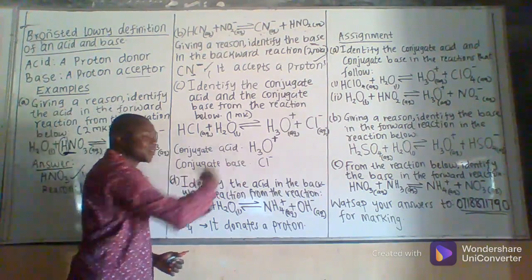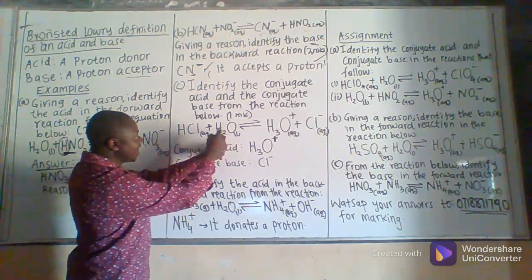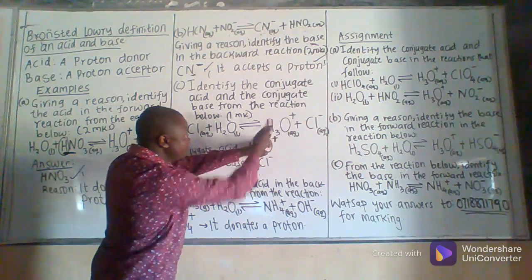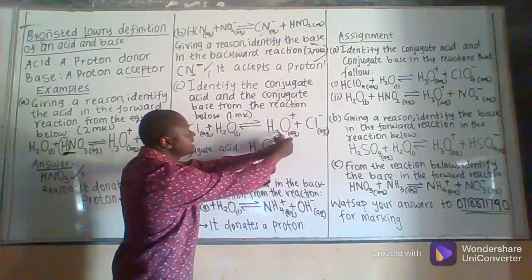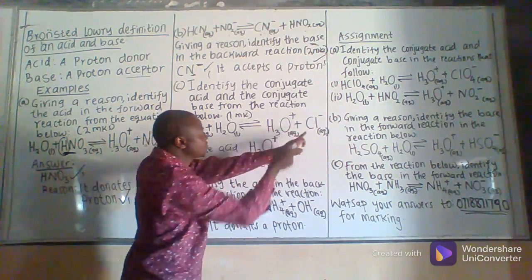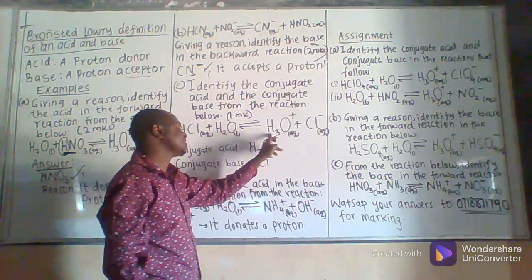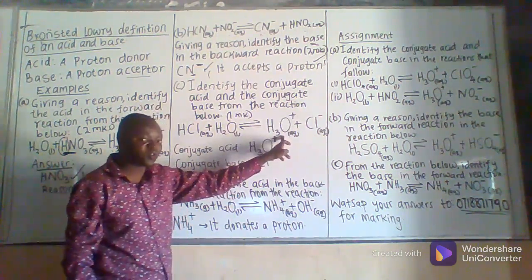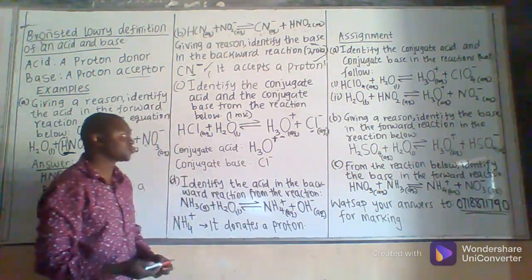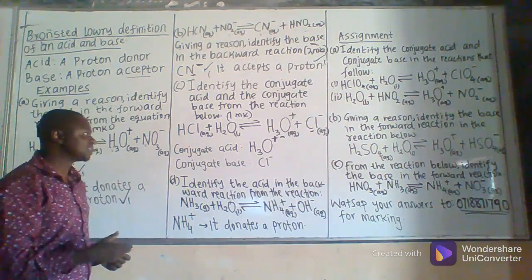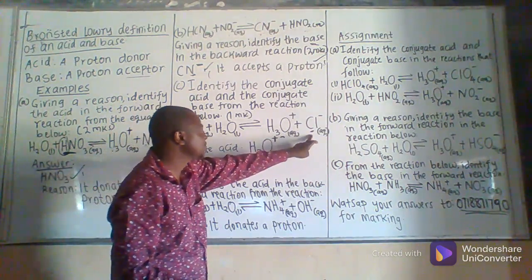Particularly if the backward reaction starts to take place: after H2O has received a hydrogen atom to form H3O positive, if the backward reaction starts to take place, the H3O positive is the one that will donate a hydrogen atom to the chloride ion. The chloride ion will therefore be the proton acceptor and H3O positive will now be the proton donor. Therefore H3O positive becomes a new acid and Cl negative becomes a new base. The new acid formed in a reaction is normally called a conjugate acid, and the new base formed is called a conjugate base.